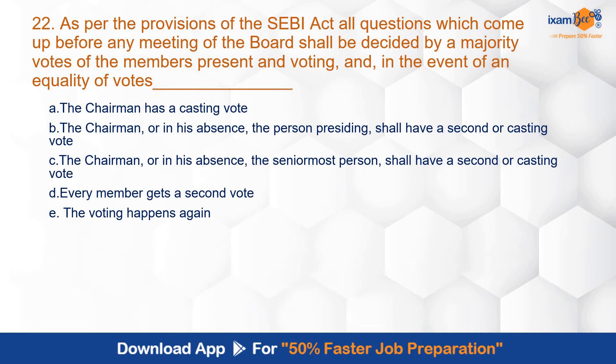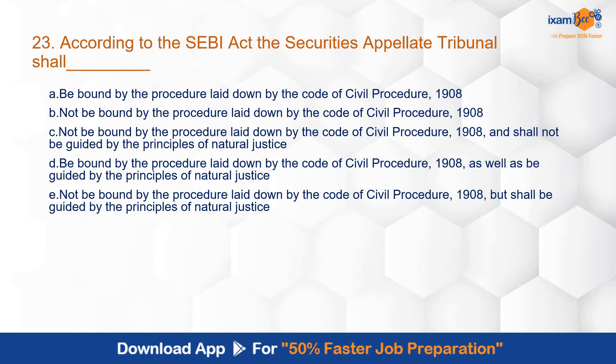Question 22: As per the provisions of the SEBI Act, all questions which come up before any meeting of the board shall be decided by majority votes of the members present and voting. In the event of equality of votes, the correct answer is: the chairman, or in his absence, the person presiding shall have a casting or second vote. This is a repeat question that came multiple times, as per section 7 of the SEBI Act.